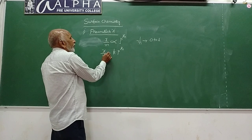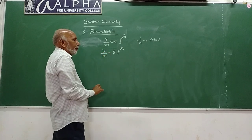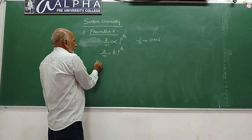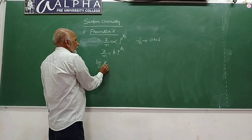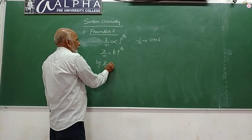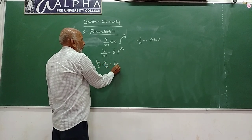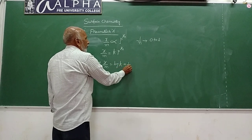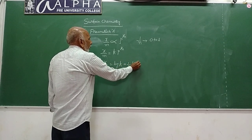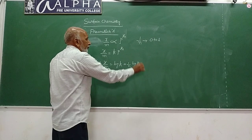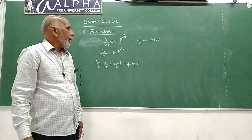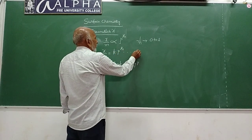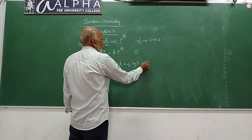Now, taking log on both sides of the equation x by m = k·p^(1/n), you get: log(x/m) = log k + (1/n)·log p. Call this equation 2.